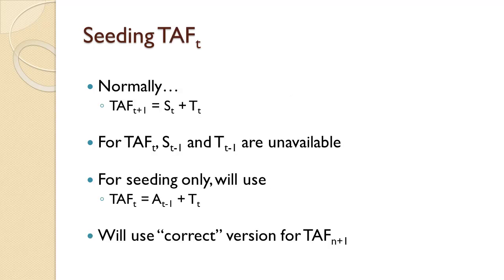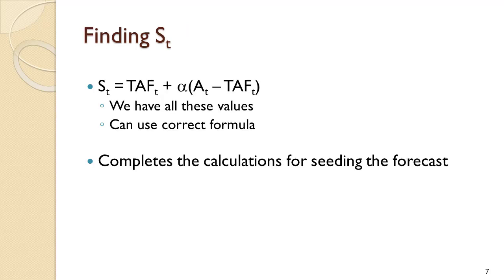Next, we will need to seed taf sub t. Normally, taf sub t plus 1 equals s sub t plus t sub t. We just calculated t sub t but s sub t is not available. For this seeding period only, we will let taf sub t equal the actual in period t minus 1 plus the t sub t value we just computed. After the seeding period, taf sub t will be calculated using the regular formula: s sub t equals taf sub t plus alpha times the quantity of the actual in t minus taf sub t. We just seeded taf sub t and we know the actual, so we can calculate s sub t rather than seeding it.